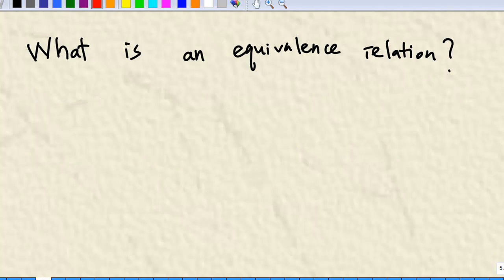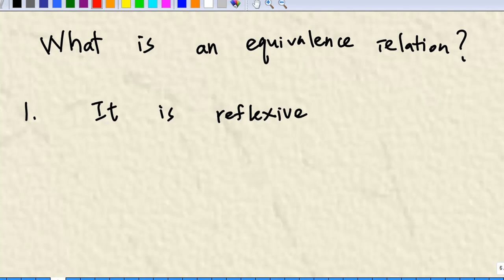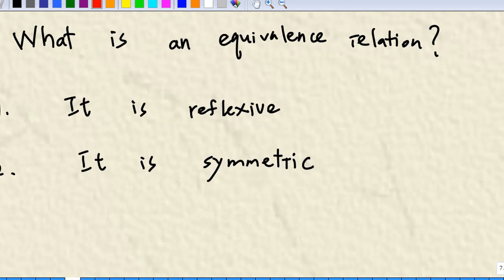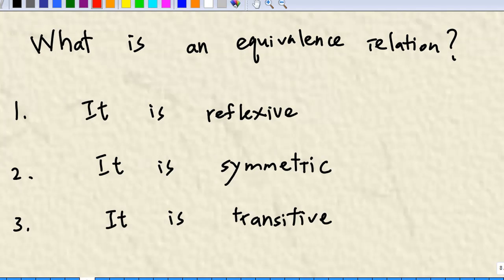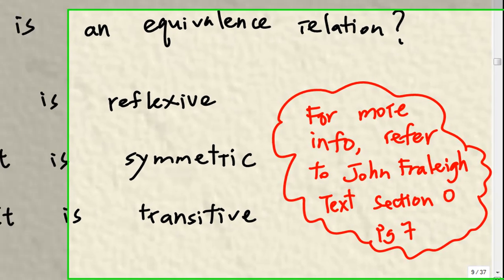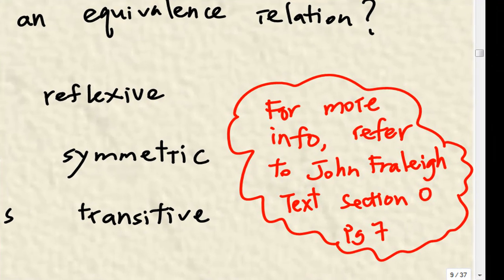What is an equivalence relation? An equivalence relation is reflexive, symmetric, and transitive. You can find more information about equivalence relations in John Fraleigh's text, section 0, page 7.